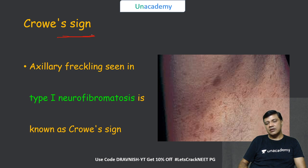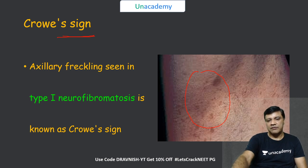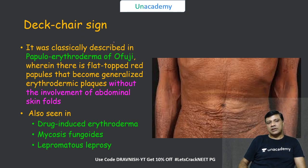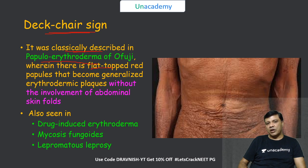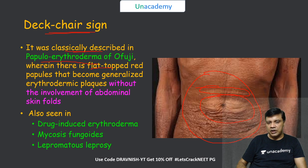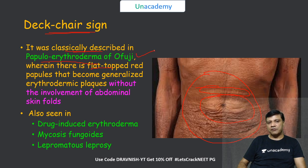The Crowe sign is axillary freckling in patients with neurofibromatosis 1 and is called a positive Crowe sign. The deck chair sign was classically described for papilloerythroderma of Ofuji, where flat-topped red lesions become generalized but spare the abdominal skin fold. It can also be seen in drug-induced erythroderma, mycosis fungoides, and lepromatous leprosy.